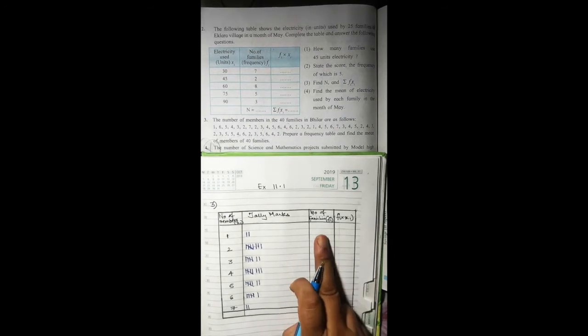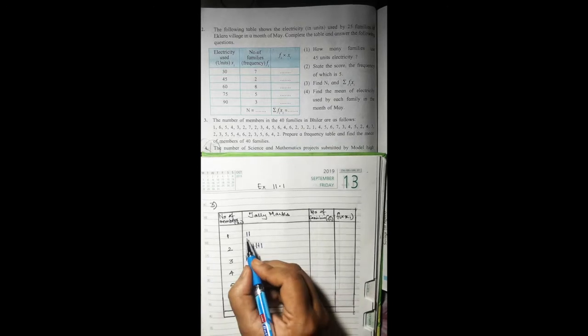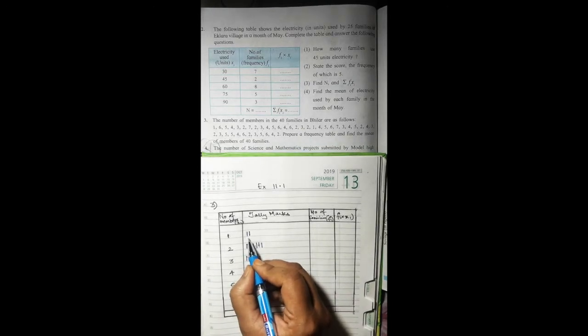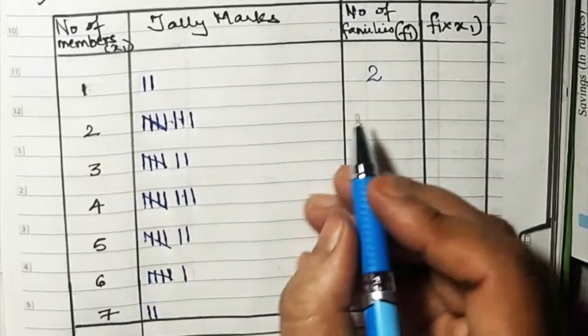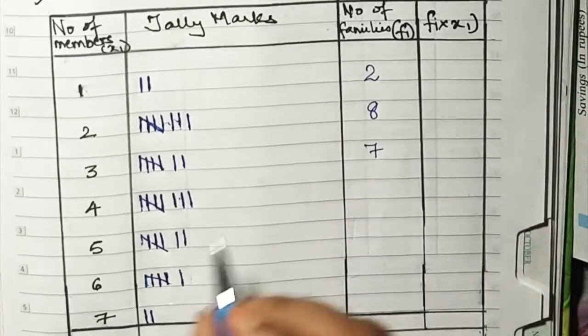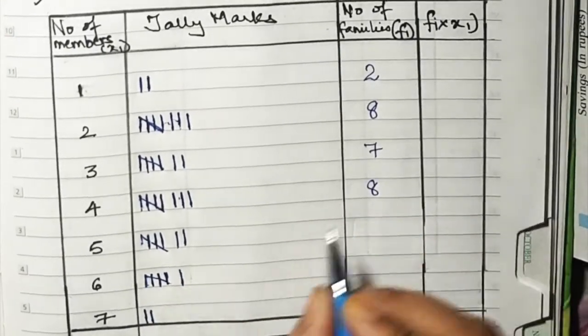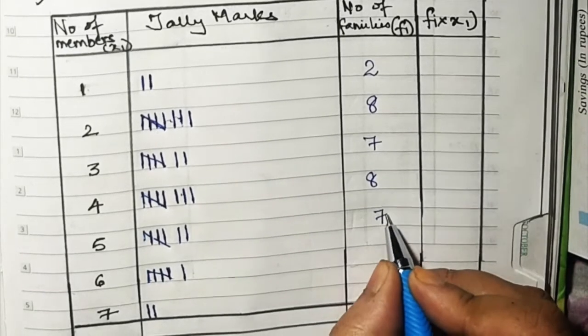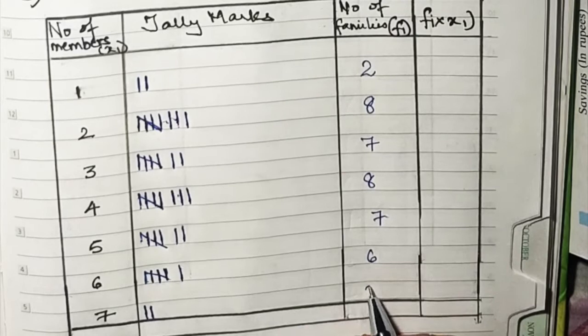We've done the tally marks. Now we'll write the number of families over here and that is fi. How many lines can you see here? Two, so here we'll write two. Now five plus three is eight. Five plus two is seven. Five plus three is eight. Five plus two is seven. Five plus one is six. And last is two.